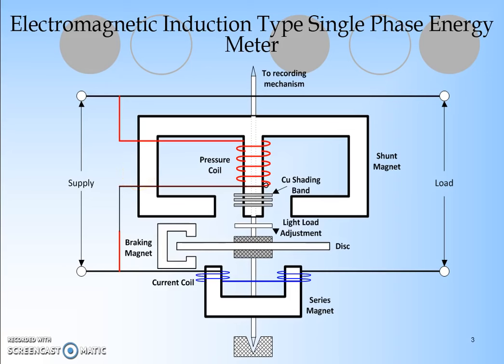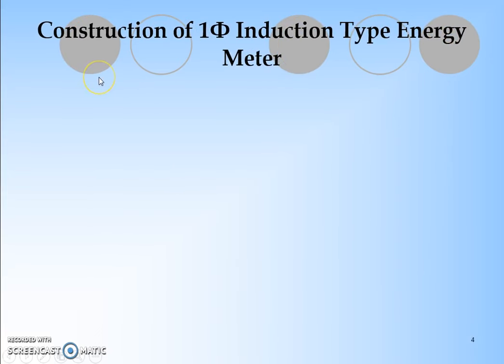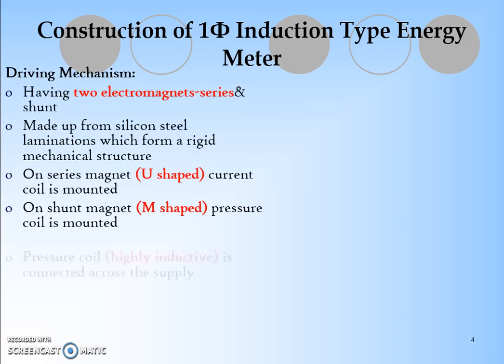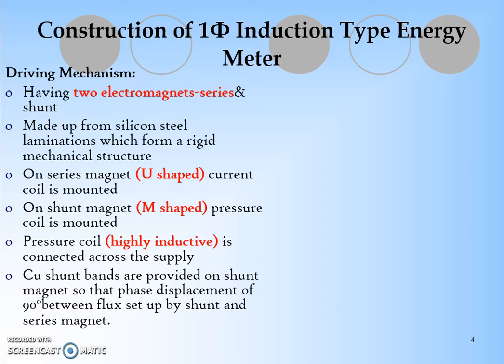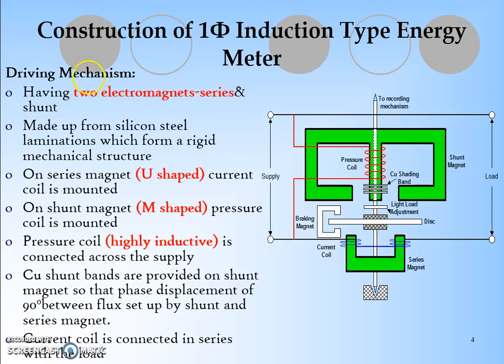Here we are seeing the construction of the electromagnetic induction type single phase energy meter. There are three types of magnets provided. The first and very important part is the driving mechanisms - how the particular disc is going to rotate. It has two electromagnets: one is the series connected magnet and another is the shunt connected magnet. The series connected magnet is the current coil and the shunt connected magnet is the pressure coil. This is the red line and this is the blue line.